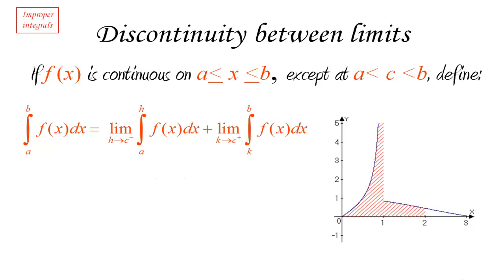Now, notice that in this definition, those two limits are done separately. You don't want to approach that value, that point of discontinuity at C from both sides simultaneously. You want to look at the left hand side and the right hand side.